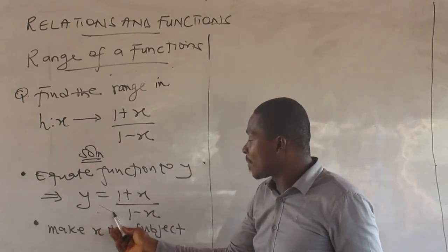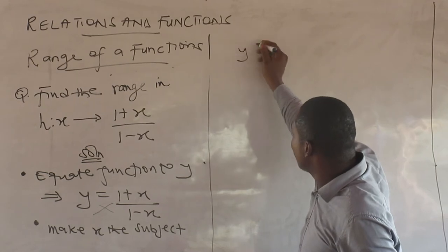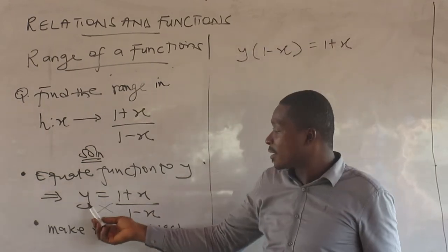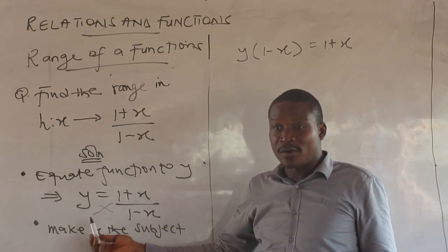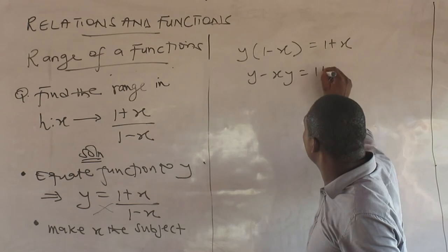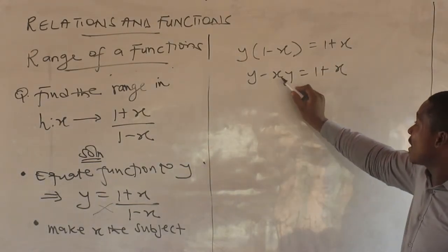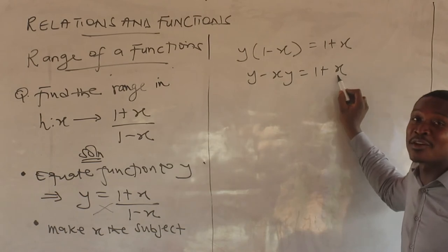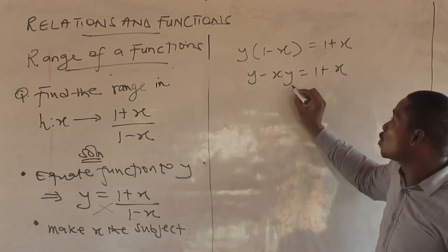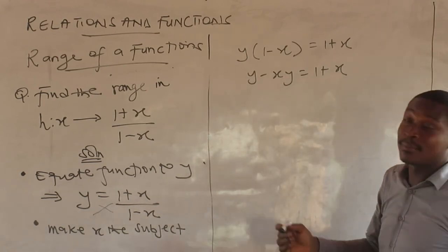Cross multiply here. I have y minus xy equals one plus x. Now I have x here and x here — rather than making just one the subject, put all the x terms together and get a representative for them.